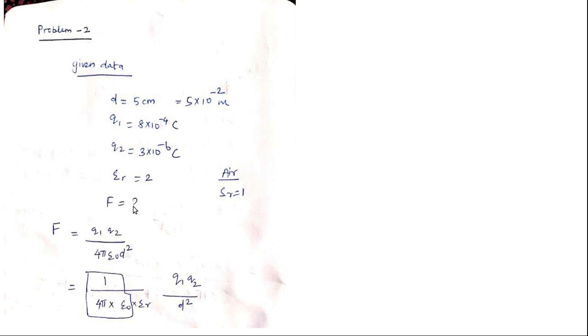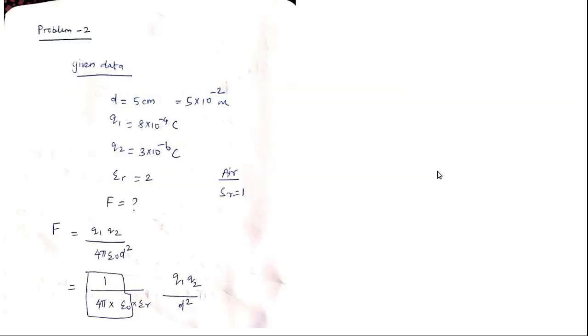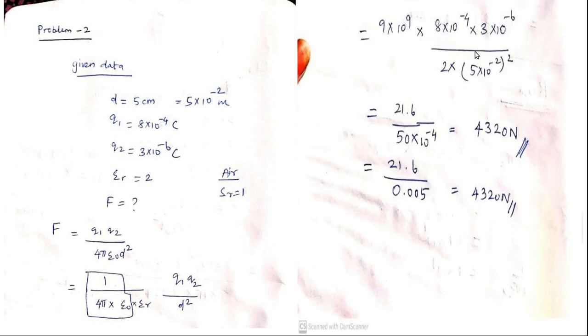Then you have to calculate the force value. F = q1×q2 / (4πε₀εᵣ×D²). I have written it here. The common factor 1 by 4πε₀ we have already calculated as 9×10⁹. So I am going to use 9×10⁹ and substitute the rest: 9×10⁹ × q1×q2 divided by εᵣ × D².